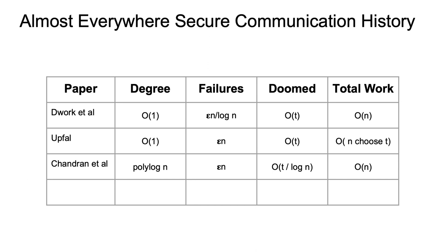A more recent work by Chandran et al. improved on the work complexity but gave up on the graph degree. It brought the work complexity back to linear, but the degree went up to a polylog. In this paper, we build on the ideas of Dwark et al. and Upful to build a simple network and protocol that have strictly better specs than Chandran et al.'s most recent work. In particular, we improved the graph degree to a simple logarithm, and the total work, for the first time, to a polylog.